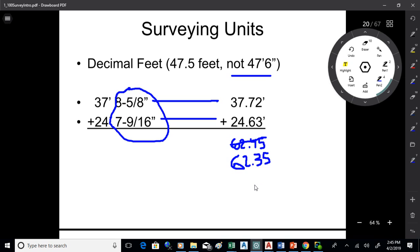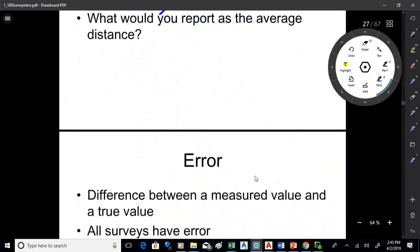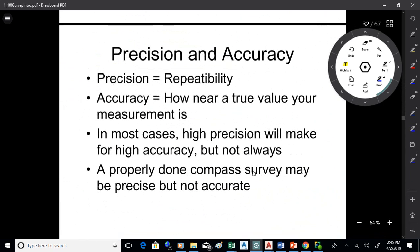That's a blunder. That's not an error. That's just somebody writing down a wrong number. That's different. But error is a very common thing in surveying. We've got all these things we do to adjust error out of our measurements.